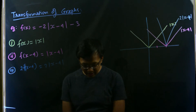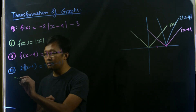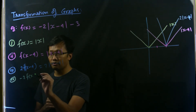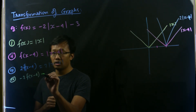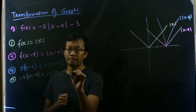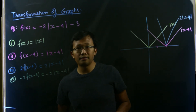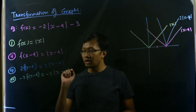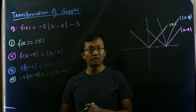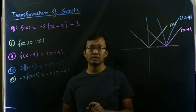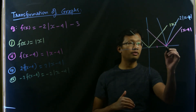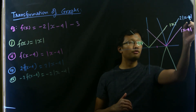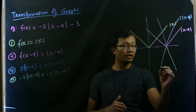Now we multiply by negative 1, giving us negative 2 times f(x minus 4), which is negative 2 times the absolute value of x minus 4. The negative sign means the function reflects about the x-axis. So this entire graph reflects — the blue curve, 2 times the absolute value of x minus 4, reflects downward.